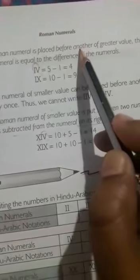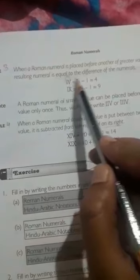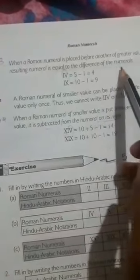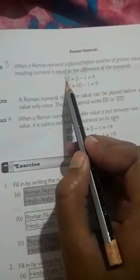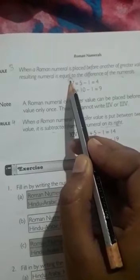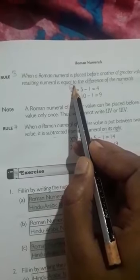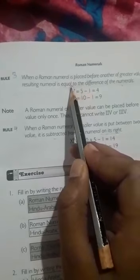Rule 3: Subtraction. When a Roman numeral is placed before another of greater value, the value of the resulting numeral is equal to the difference of the numerals. If smaller number is on the left, smaller number left means subtraction from the bigger number.